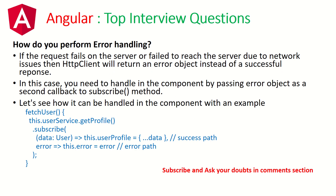How do you perform error handling? This is a tricky question asked to check whether you have really implemented it. If a request fails or is unable to reach the server — whether it's a 400, 403, 500, or 201 error — the HTTP Client will always return an error object. When you subscribe, you get two parts: the response and the error. If there is an error, we set this dot error and show a dialog box or alert warning, depending on how you design your application. That's how the error is caught — once you have it, you can display it as a warning or error message in your application.